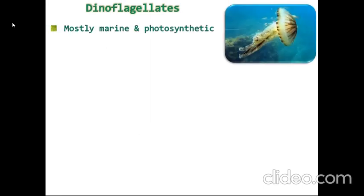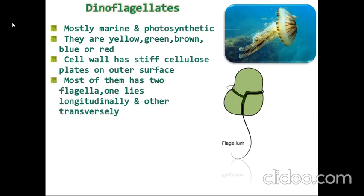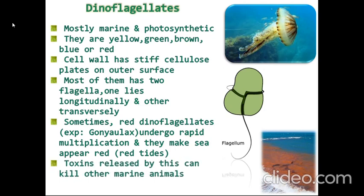The next one is the dinoflagellates. They are mostly marine and photosynthetic. They are yellow, green, brown, blue, or red in color. Their cell wall has stiff cellulose plates on the outer surface. Most of them have two flagella — one lies longitudinally and the other transversely. Sometimes red dinoflagellates like Gonyaulax undergo rapid multiplication and make the sea appear red. This is known as red tides and is highly toxic. Toxins released by these can kill other marine animals.